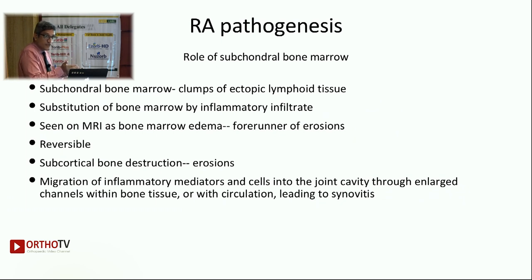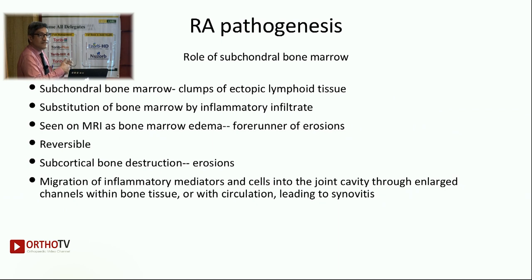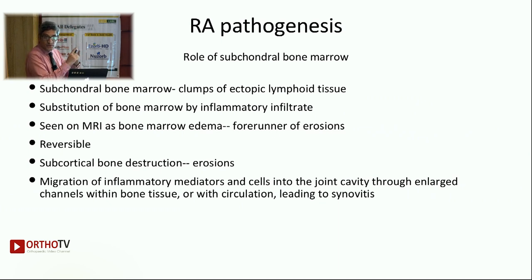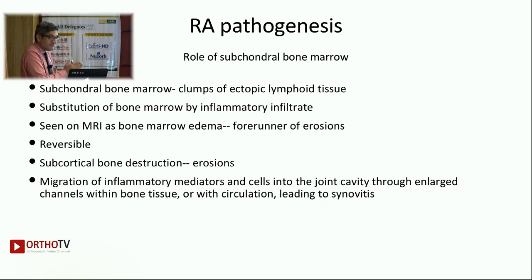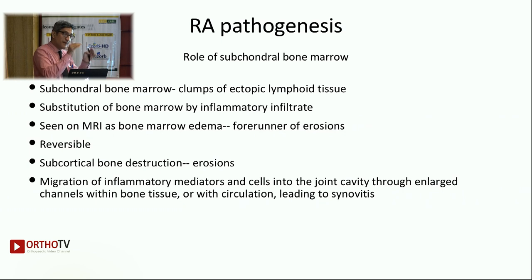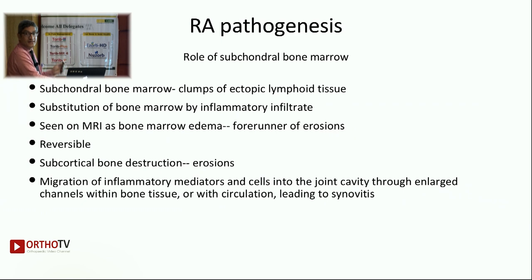Where else does this destruction come from? What is the role of subchondral bone marrow? Subchondral bone marrow also gets clumps of ectopic lymphoid tissue — this is one more place where autoimmunity homes in. There is substitution of the bone marrow by inflammatory infiltrate, and this is picked up on MRI as bone marrow edema. When we get MRI of the hands or any other joint, we look for synovial hypertrophy, joint effusion, and this bone marrow edema. Bone marrow edema is a forerunner of erosions — if we institute therapy at the bone marrow edema stage itself, we will not end up with erosions. Erosions develop from the pannus itself and also from the subchondral bone marrow side.